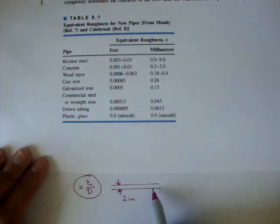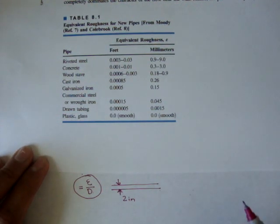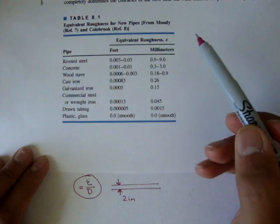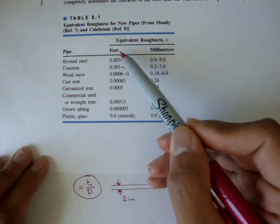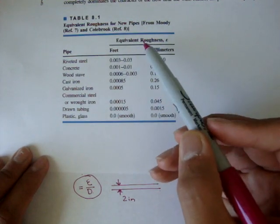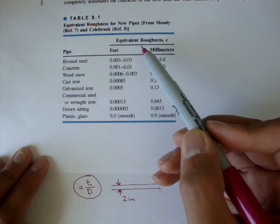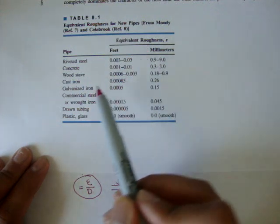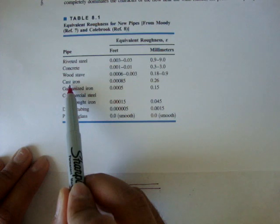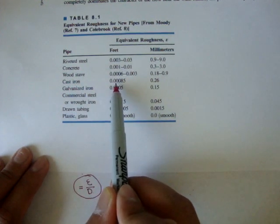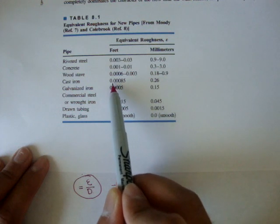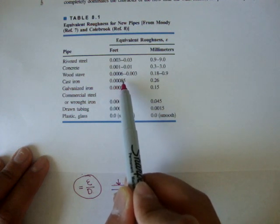Say we had a pipe, and in the problem they said the pipe was made out of cast iron, and we were working in U.S. customary units. If the problem stated it was a cast iron pipe, you'd come over here, and if we're working in U.S. customary units, the value of epsilon would be given. It'd be 0.00085.